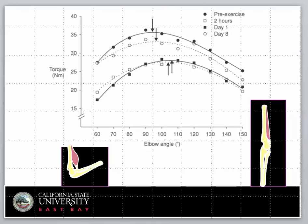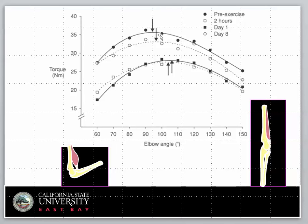Here is a version of the force-length relationship applied to a joint — specifically full elbow flexion and full elbow extension of the biceps brachii. Since we're dealing with a joint, we have to deal with torque, because we cannot measure muscle force directly; we measure joint torque. As the elbow angle changes and the muscle length goes from short when flexed to lengthened in full extension, torque increases to mid-range around 90–100 degrees of elbow flexion, and then torque decreases — very similar to what we saw before.